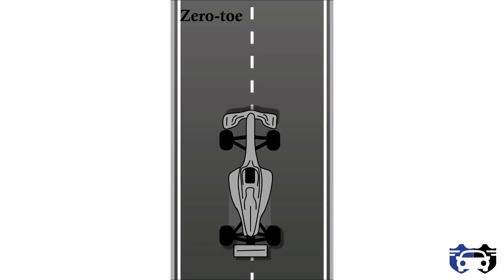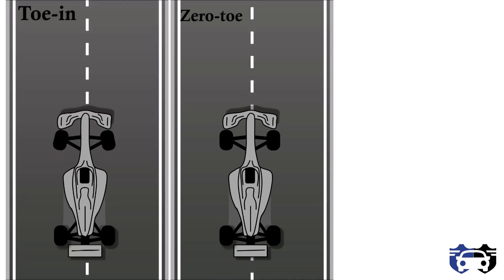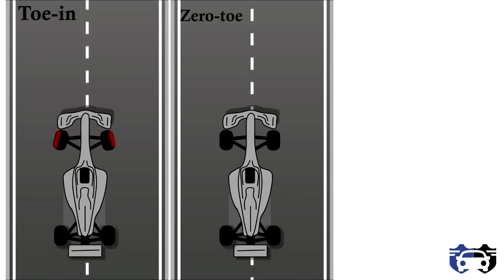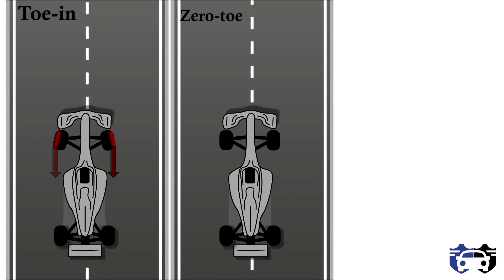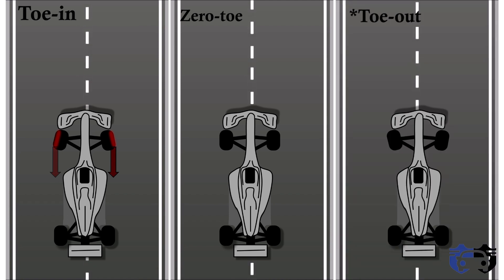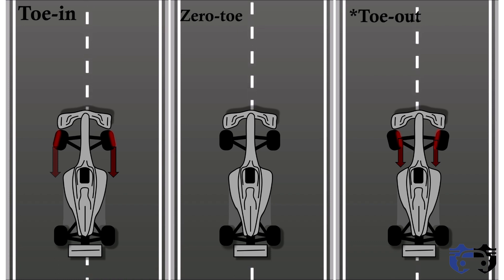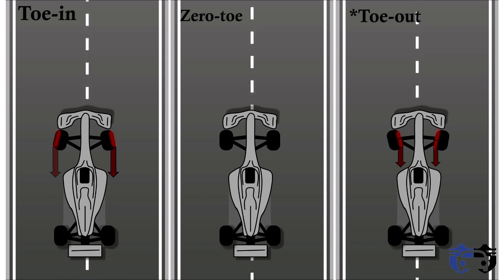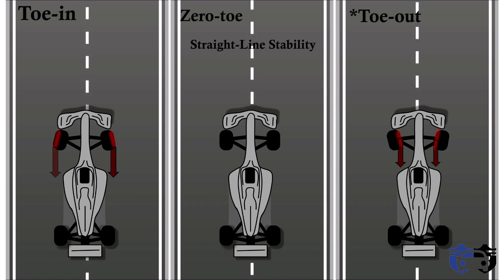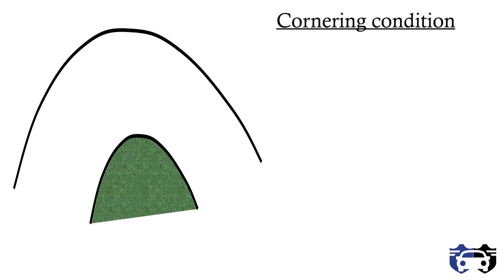When analyzing handling on the track: with zero toe, tires rotate freely. With toe-in, the outer edge of the tires heats up, increasing tire wear and producing drag. With toe-out, the inner edge of the tire heats up, also producing drag and increasing tire wear. Because of this, zero or neutral toe is best for straight-line stability.